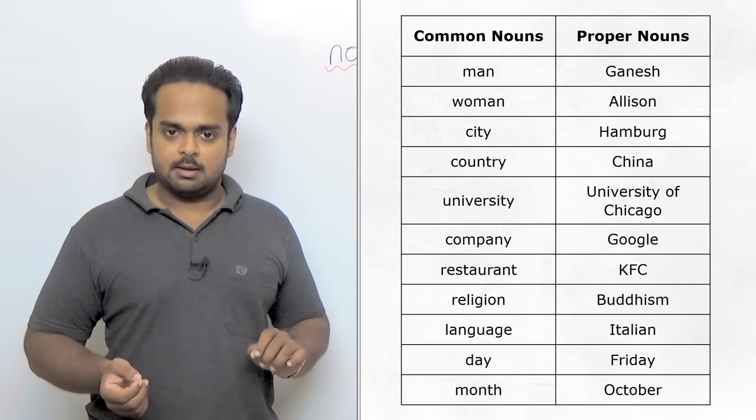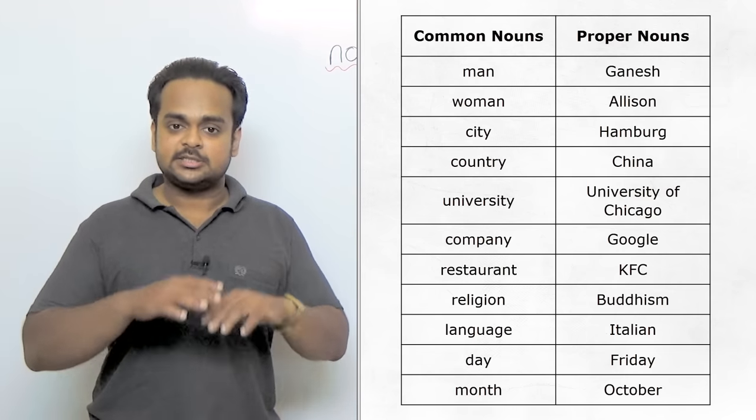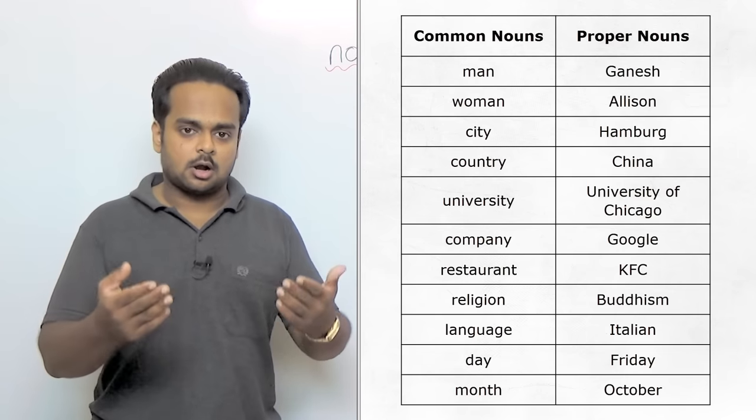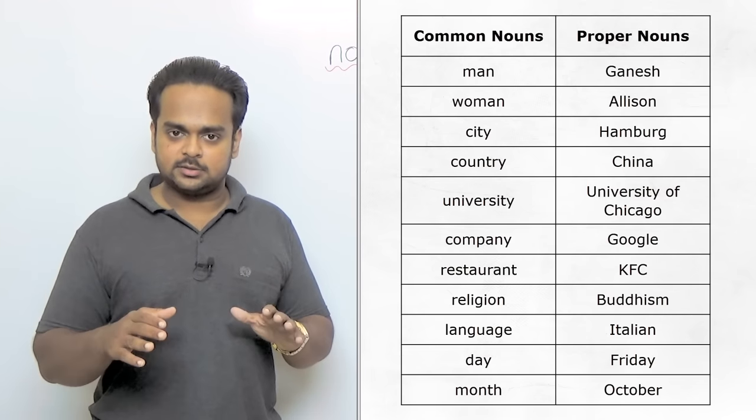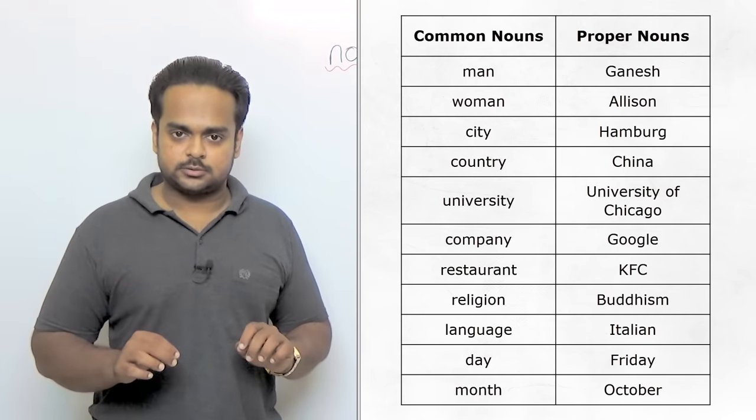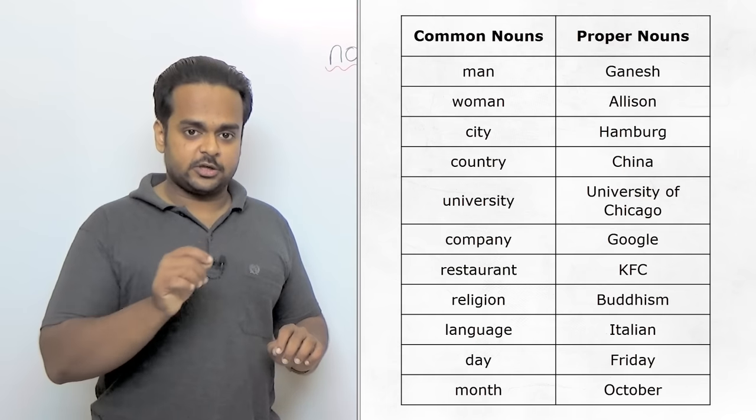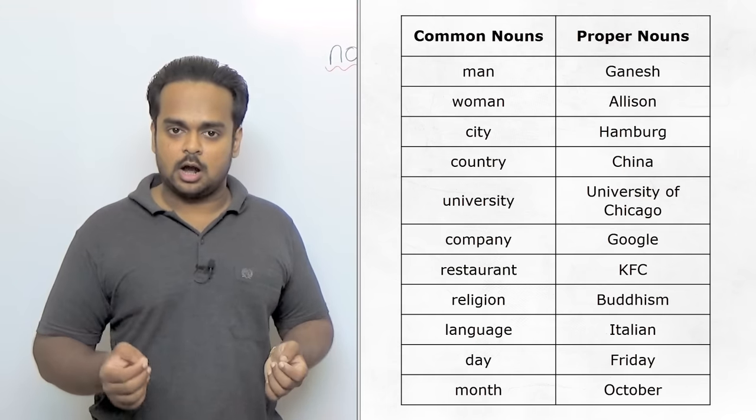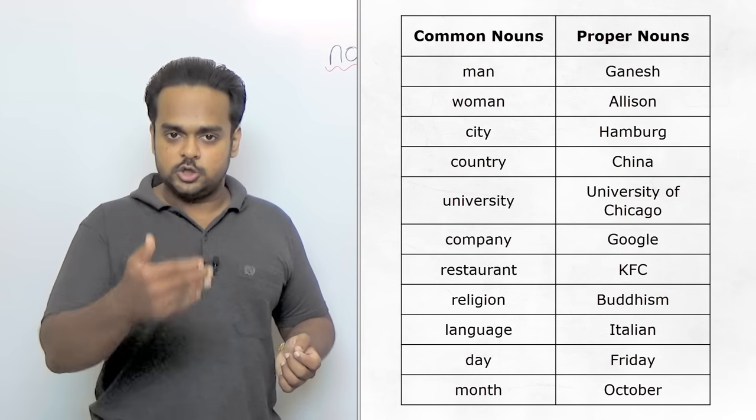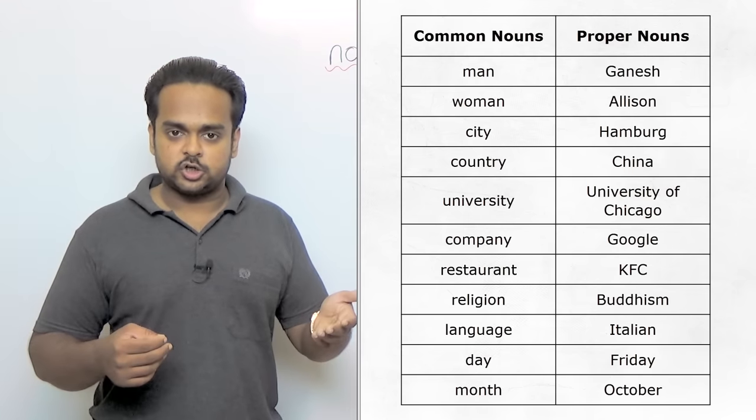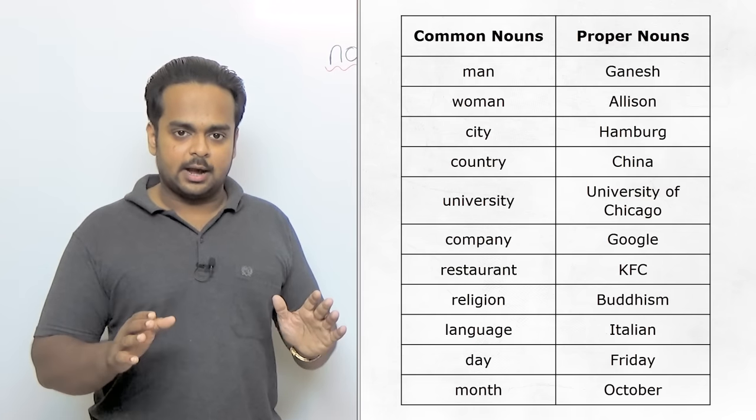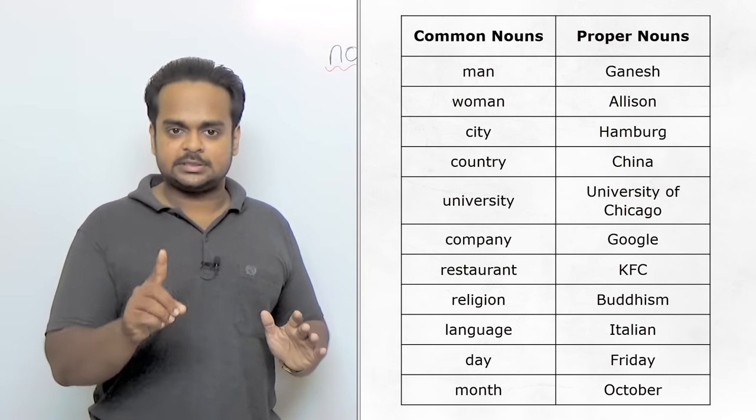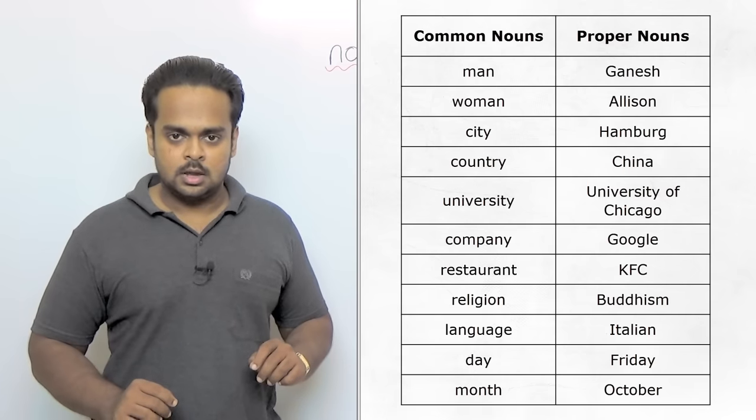In university, for example, when we talk about universities in general, we use it as a common noun, so the whole word is written in lower case, that means in small letters. But when we're talking about a specific university, like the University of Chicago, notice that both the U in university and the C in Chicago are capitals. That's because it's a proper noun that refers to one specific university.